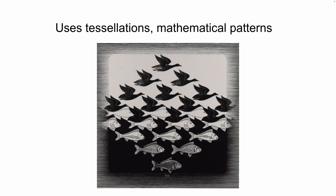He also used tessellations, which are mathematical patterns. You can see here that the bird, when we cut around it, also makes the shape of a fish, and when we look at the fish and around it, we can see the shape of the bird. The best way to see it is in this row right here — we see the bird, and we also see the fish.